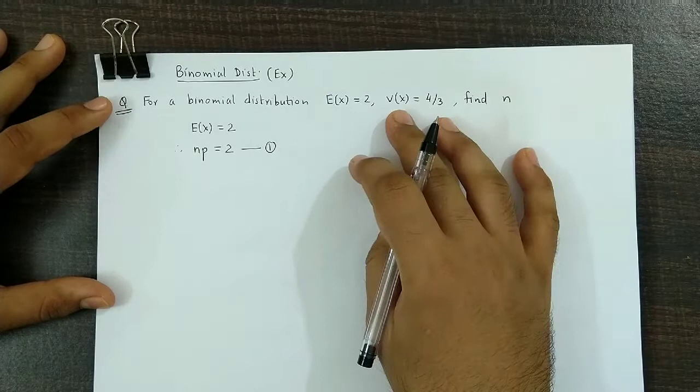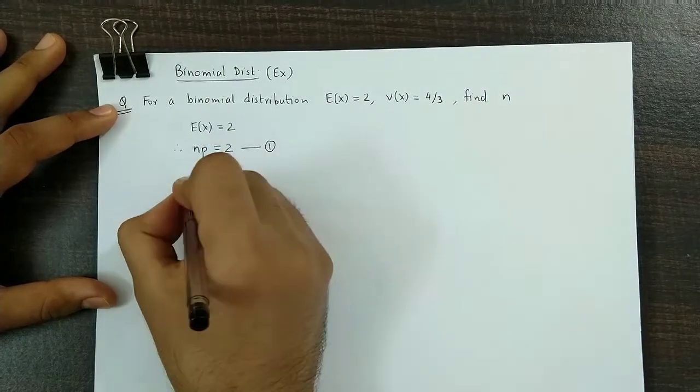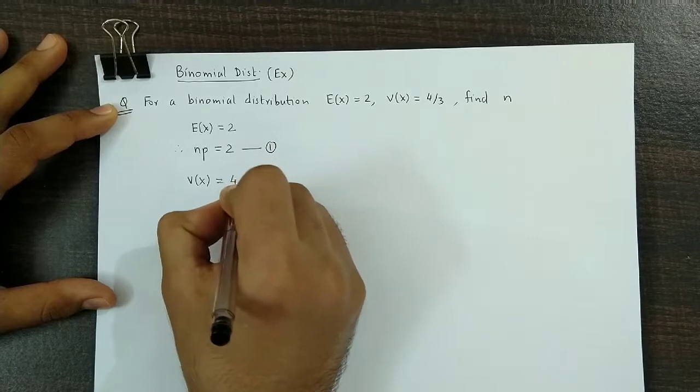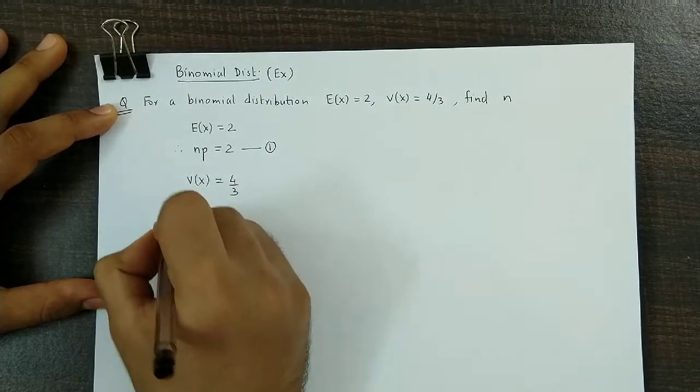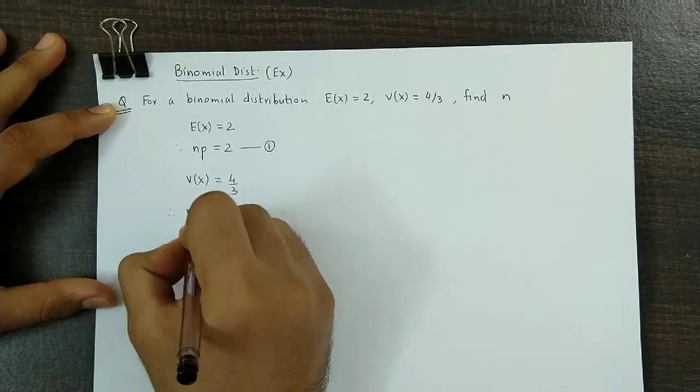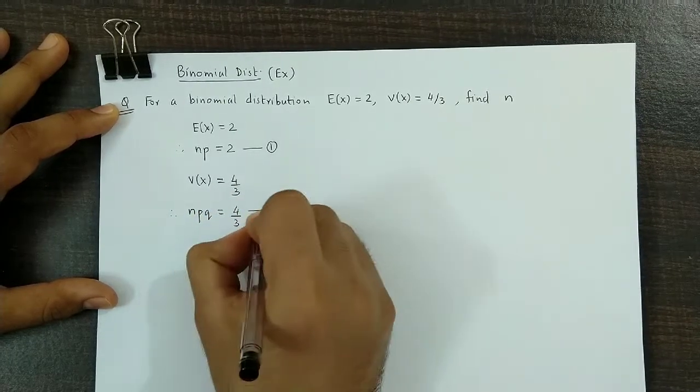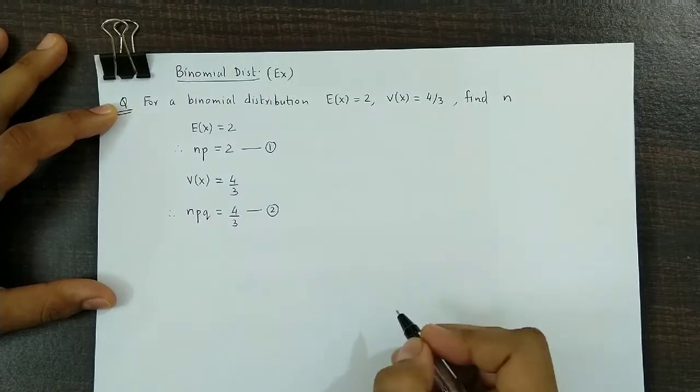Next, variance value is 4/3. So V(X) is equal to 4/3. And variance as we know is N into P into Q is equal to 4/3. Equation number 2.